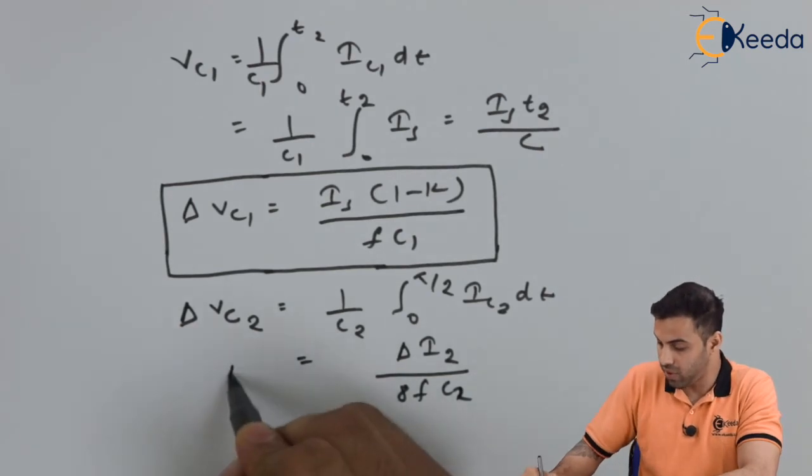These are the mathematical expressions for the Cuk converter. We have learned what a Cuk converter does, how it operates, and how to calculate the average output voltage, average ripple inductor current, and ripple voltage across the capacitors. Thank you for watching — please subscribe to Ekeda and stay tuned.